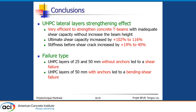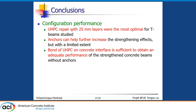We can draw several useful conclusions. UHPC lateral layers are very efficient for strengthening concrete beams, with substantial capacity and stiffness increases. Beams without anchors lead to shear failure, while the 15 mm beam with anchors leads to bending-shear failure, which is a better failure mode. The 25 mm UHPC layer was the most optimal configuration. Anchors can further increase the strengthening effect but only to a very limited extent, suggesting the UHPC-to-concrete interface bond is sufficient to obtain adequate performance.